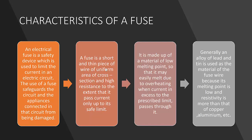Characteristics of a fuse: A fuse is a device used to limit the current in an electric circuit. It has a short thin wire of uniform area of cross section and high resistance, passing current up to a safe limit. It is made of material of low melting point so it easily melts due to overheating when excess current flows through it. The wire is generally made of an alloy of lead and tin because its melting point is low and resistivity is more than that of copper and aluminium.